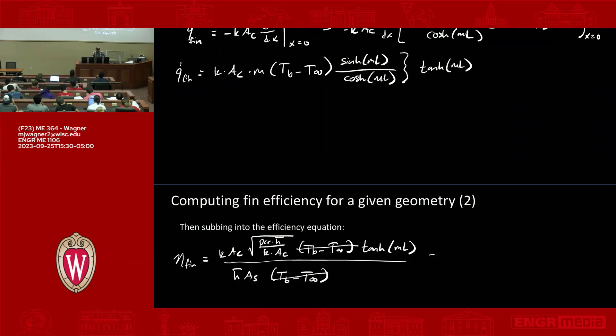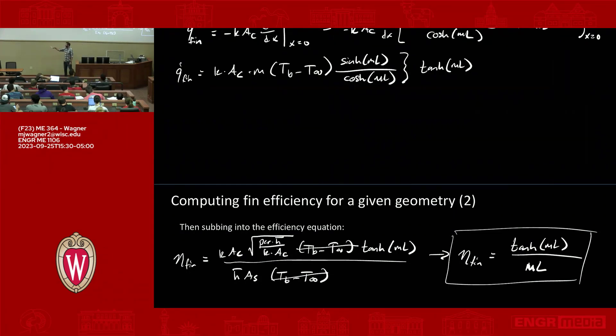So we can further consolidate this down now. We get to a point where we have a nice tidy definition. We'll do some cancellation of h bar. We'll substitute in. We have AC and AS. Let's keep track of that. We have parameters, ACs. We can do a further simplification, and it looks like this. It looks like eta fin is equal to tanh of ML over ML. So I guess you'll have to take my word that it does that, but you can convince yourself, too. So this is a really nice tidy definition or derivation for fin efficiency. But again, remember this is for adiabatic tip, constant cross sectional area.